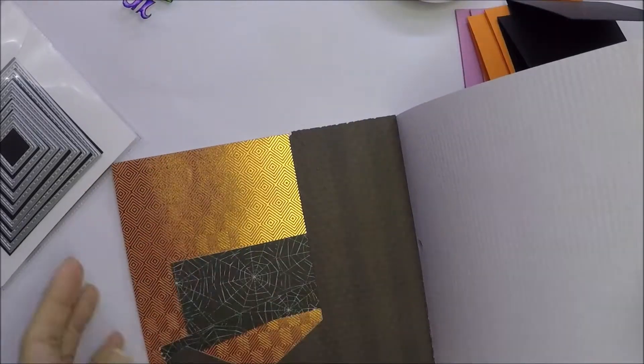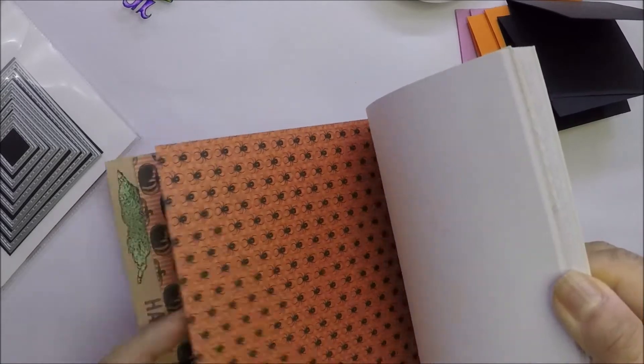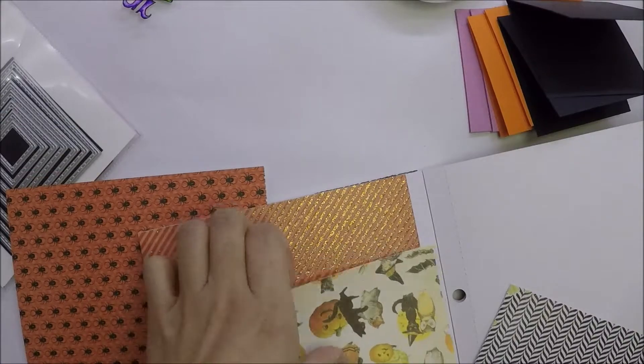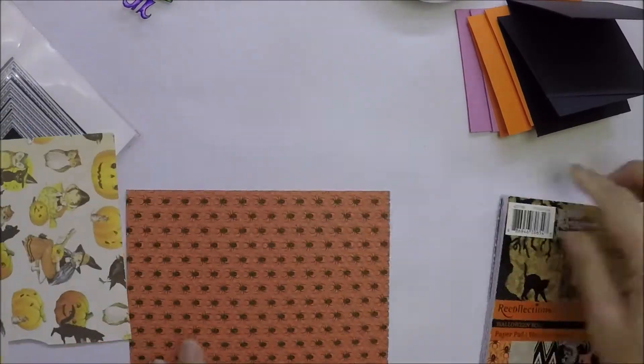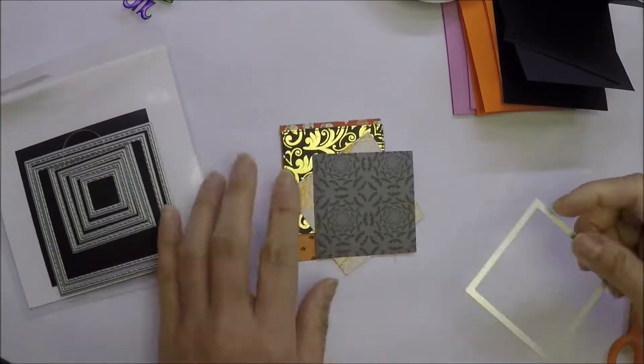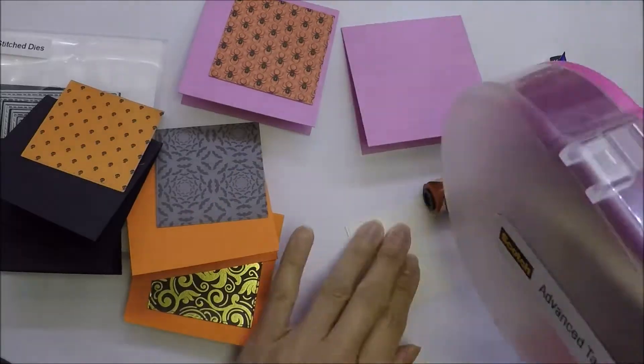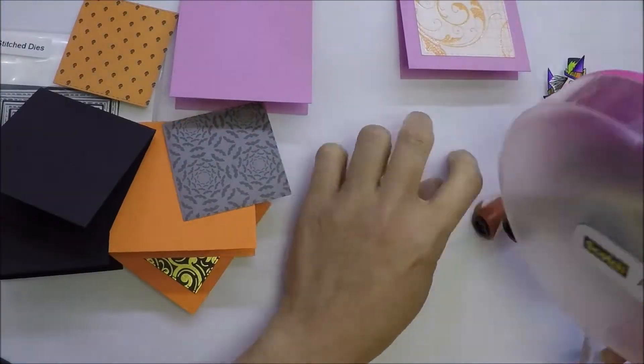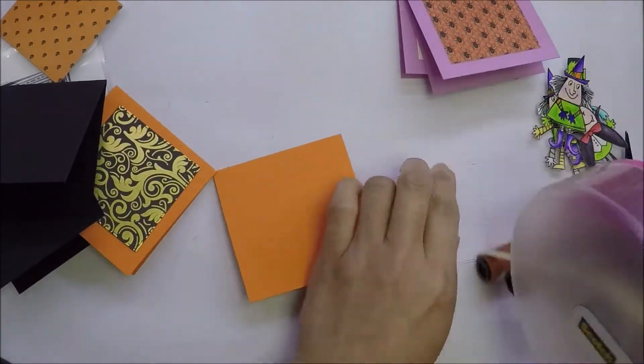I cut my paper to 6.5 inches and scored it in half. I also used pattern paper from Recollections Halloween paper pad that I got from Michaels a couple of years ago. I die cut my pattern paper using my stitch rectangle die and I'm going to adhere the pattern papers on my 3x3 card bases using ATG gun.